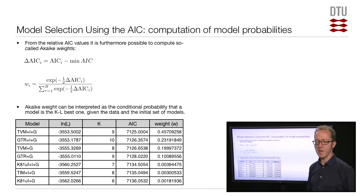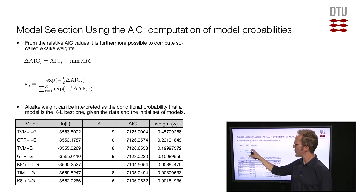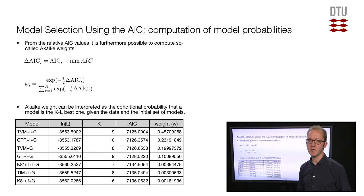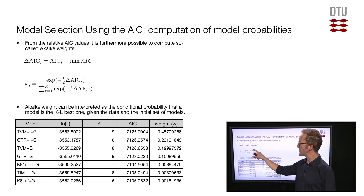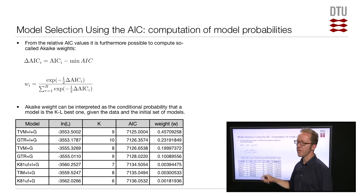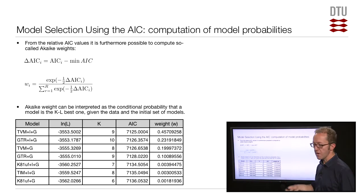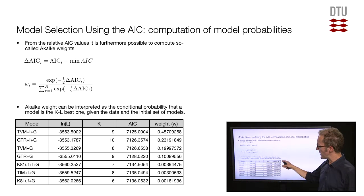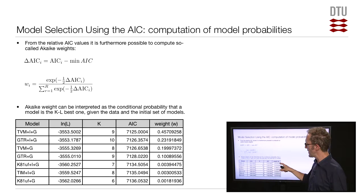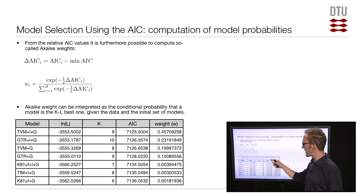Once you have the delta AIC values, you compute the Akaike weight according to the following formula: for each model compute the exponential of minus 0.5 times the delta AIC, then sum all those terms, and finally divide each term by that sum. This gives the so-called Akaike weight. These weights sum to 1 by definition, and they can be interpreted as the probability that any given model is the best one in the Kullback-Leibler sense, given the data and the initial set of models.